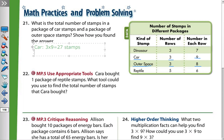For the outer space stamps, we have three times eight. We separate the three into two and one: two times eight and one times eight. Two times eight equals sixteen, one times eight equals eight. Sixteen plus eight equals twenty-four stamps.